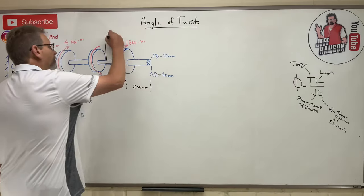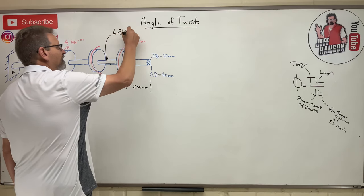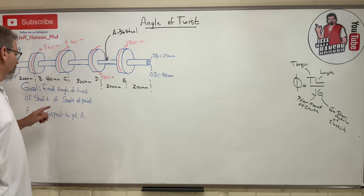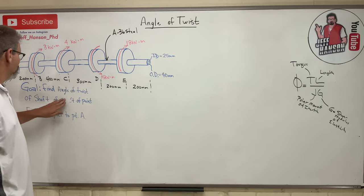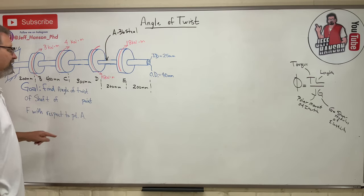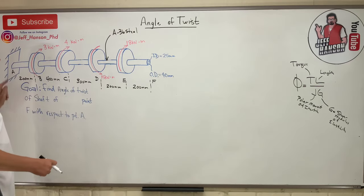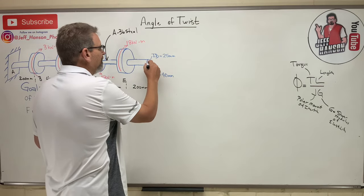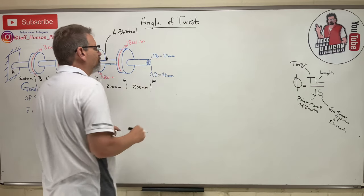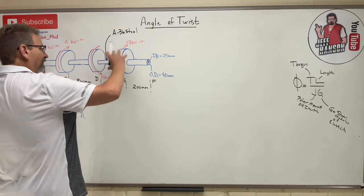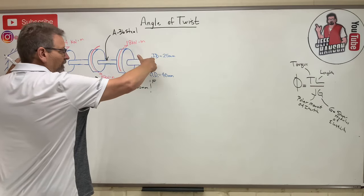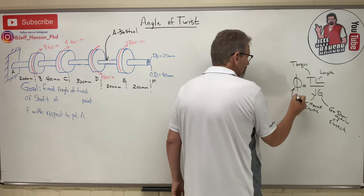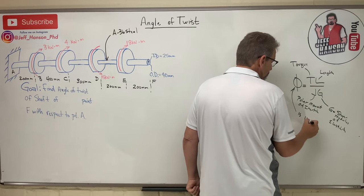Let's say this shaft is made out of A36 steel. We want to find the angle of twist of point F with respect to point A — point F is way down at the free end, and point A is at the wall. Imagine there's a little clock dial on the end, initially at 12 o'clock. As we apply all these twists, does it move clockwise or counterclockwise, and by how much? Note that φ is in radians.